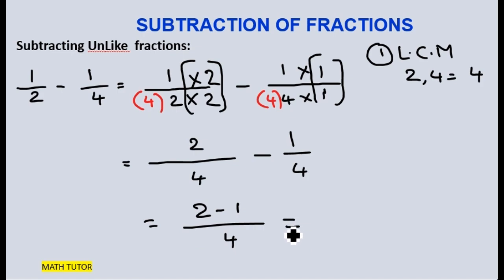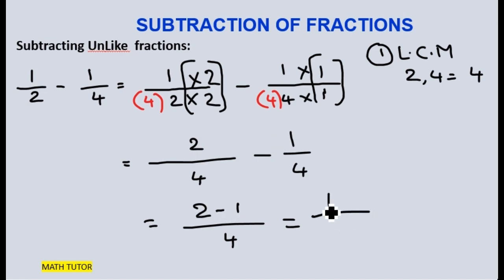Now you just subtract the numerators and write the common denominator. I converted the unlike fractions into like fractions, and then simply subtract both numerators and write the common denominator. So the most important step is finding the LCM. Kids, you must be fully thorough with finding the LCM.